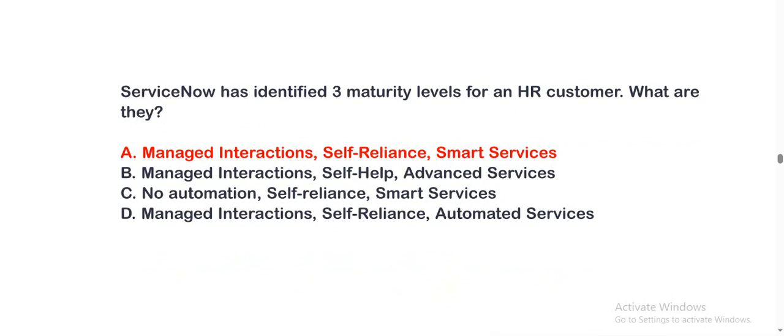ServiceNow has identified three maturity levels for an HR customer. What are they? Option A: managed interactions, self-reliance, smart services. Option B: managed interactions, self-help, advanced service. Option C: no automation, self-reliance, smart services. Option D: managed interactions, self-reliance, and automated services. The correct option is A.